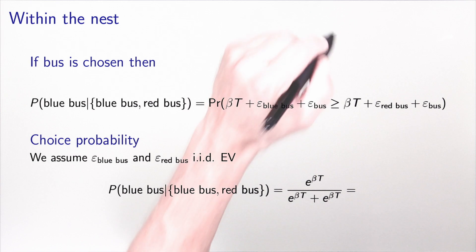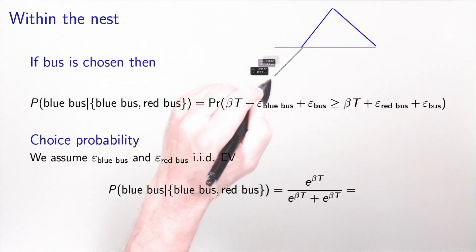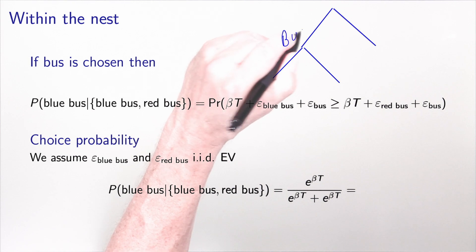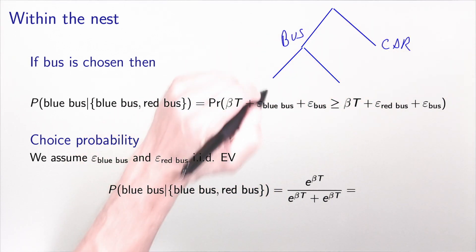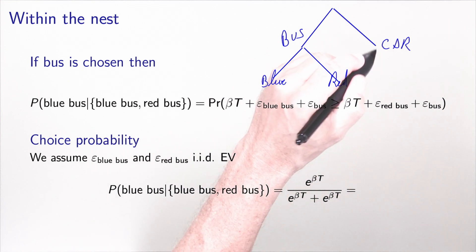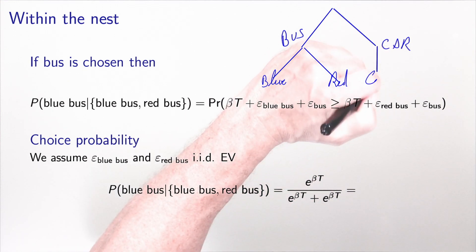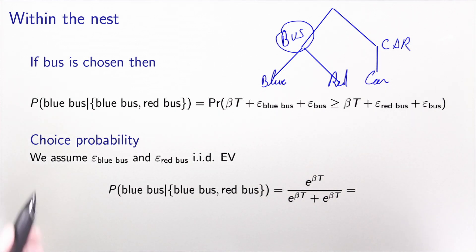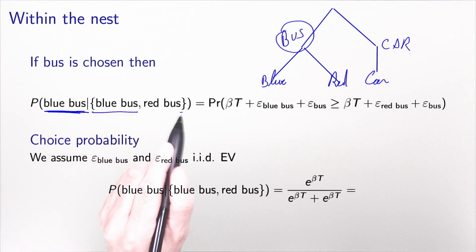So remember the intuition was to have a tree representation where we have bus and car at the upper level, and blue bus, red bus, and car at the lower level. We will first look at what happens within the nest, assuming that the bus is chosen, and model the choice between blue bus and red bus — specifically, the probability of choosing blue bus given the choice is between blue bus and red bus.